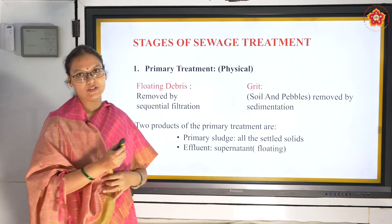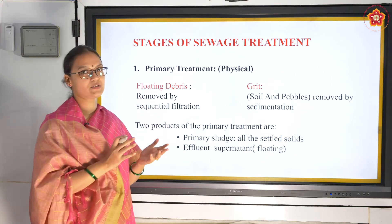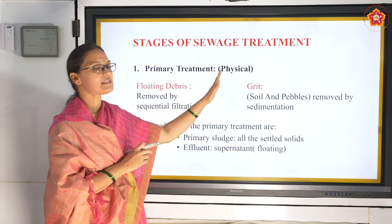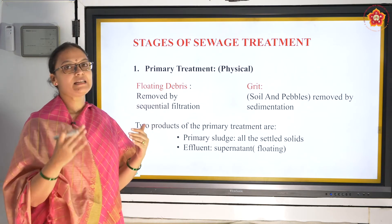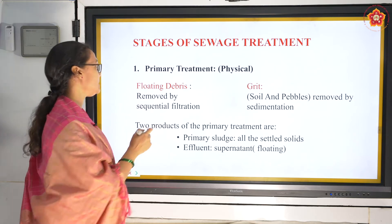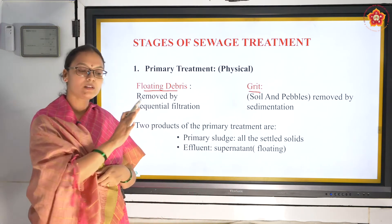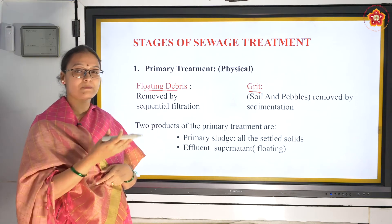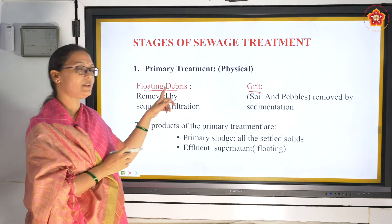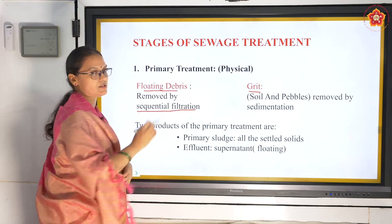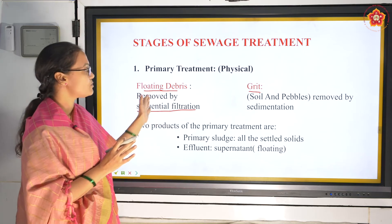The stages of sewage treatment: the first stage is called primary stage and the second stage is called secondary stage. The first stage is a physical stage - as the water enters the sewage treatment plant, everything that is physically visible is removed. There is floating debris - like plastic covers, papers, cloth pieces, water bottles - all removed by sequential filtration through huge filters.